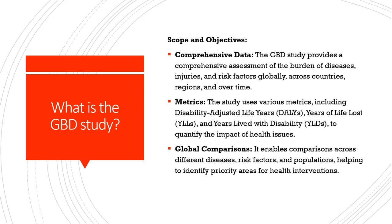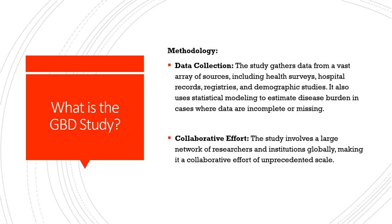There are very rich comparisons across different diseases, risk factors, and populations, and these different comparisons help us to identify different priority areas for health sector interventions. The data used for the GBD comes from a vast array of sources. It includes country-specific health surveys — for example, in India we have the National Family Health Survey — and demographic health surveys carried out in many country contexts. There are also many hospital records, registries and other demographic studies, and it uses very sophisticated statistical modeling to estimate disease burden in cases where data are incomplete or missing.